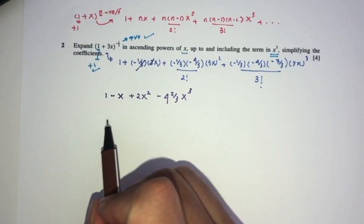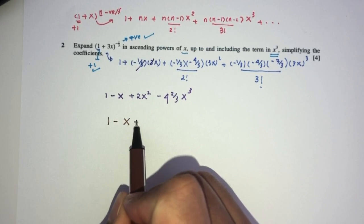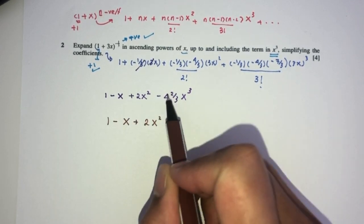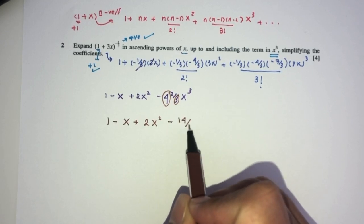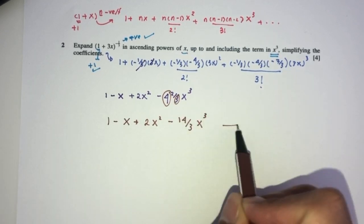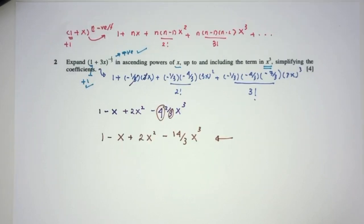Because we know 3 factorial is just 6. So that's why I divided by 6. Now simplify, you will have your answer as 1 minus x plus 2x squared. Now 4 times 3 is 12, plus 2 is 14, that should be minus 14 over 3 x cubed. And this is your answer for question number 2.